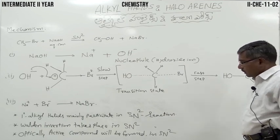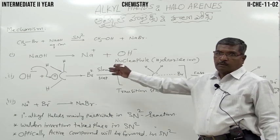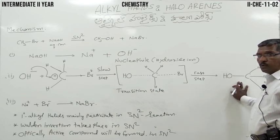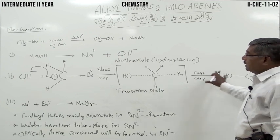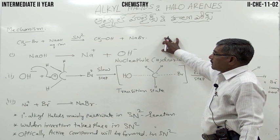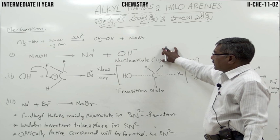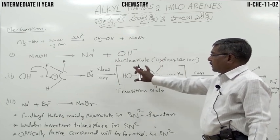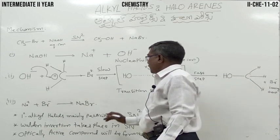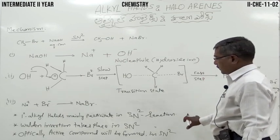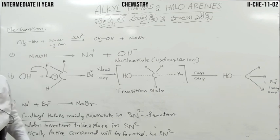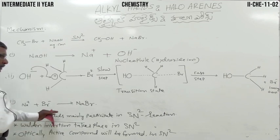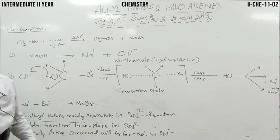Walden inversion involves an optically active, asymmetric molecule. In SN2, definitely an optically active compound is obtained. If you take the levorotatory compound, you get the dextrorotatory compound, and vice versa. The condition for SN2 reaction is primary alkyl halide, rarely secondary alkyl halide. For tertiary alkyl halide, the rate of reaction is very slow. That is why alkyl halide must be primary alkyl halide for SN2 reaction.